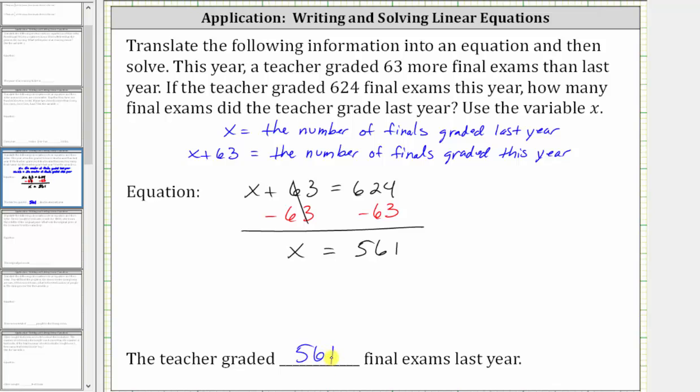Let's verify the solution satisfies the equation x plus 63 equals 624. If we substitute 561 for x, we have 561 plus 63 equals 624, and 561 plus 63 is 624. 624 equals 624 is true, verifying the solution is correct.